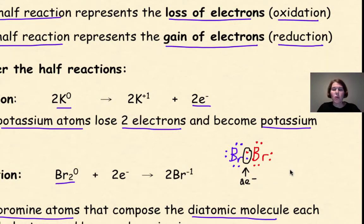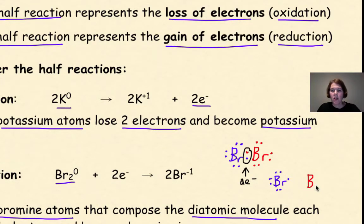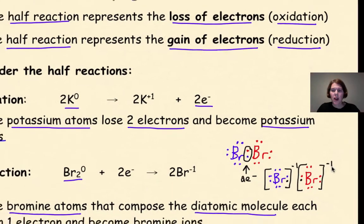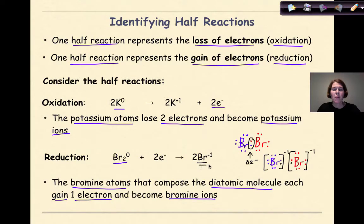Going back to the original bromine atoms — each Br has seven valence electrons, and then we have the two added-on electrons being gained, one per atom. As each bromine atom gains an electron, we now have an overall charge of negative one for each. That is how each becomes a bromine ion, which is why we represent them as two Br⁻¹, and not Br subscripted two minus one, because we're forming two ions that each have their own full octet.